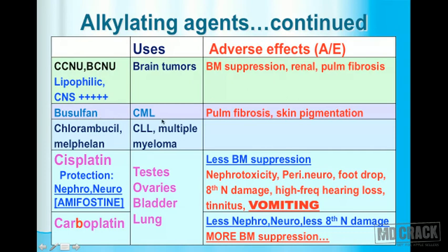Busulfan is commonly used for CML (chronic myelogenous leukemia). Its adverse effects include pulmonary fibrosis and skin pigmentation. Chlorambucil and melphalan are useful for CLL (chronic lymphocytic leukemia) and multiple myeloma. So to summarize: busulfan for CML, and chlorambucil and melphalan for CLL.